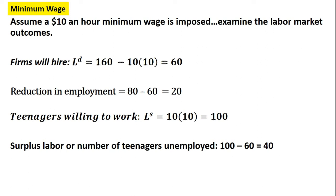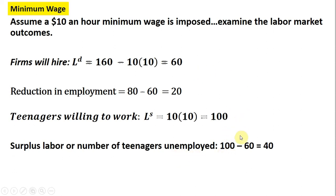This is a reduction in employment — without the minimum wage, the equilibrium level of employment was 80, so firms will cut back on hiring. On the supply side, plugging $10 into the labor supply equation shows that 100 teenagers are willing to work at $10 an hour. That creates an imbalance: a surplus of labor, or unemployment, of 100 minus 60 equals 40 workers.